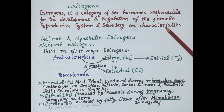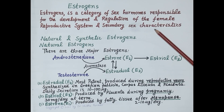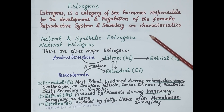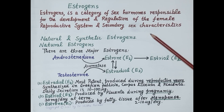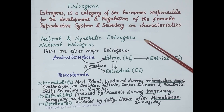Estrogen is required for the pubertal growth of reproductive organs like the uterus, fallopian tubes, and vagina, and also for the development and maintenance of secondary sexual characteristics in women — for example, development of breasts and appearance of pubic and axillary hair. Estrogens are naturally produced in the body from cholesterol, and they are also synthesized.